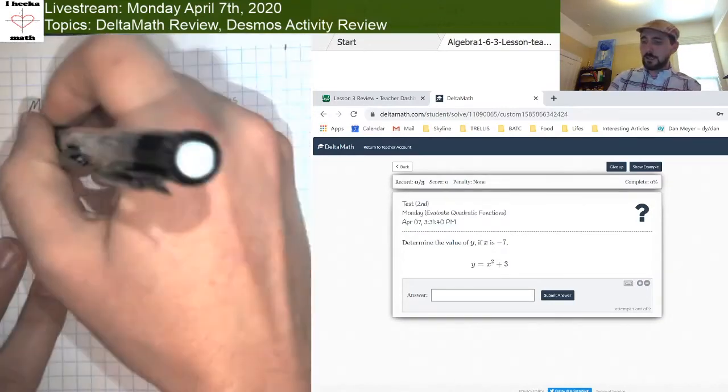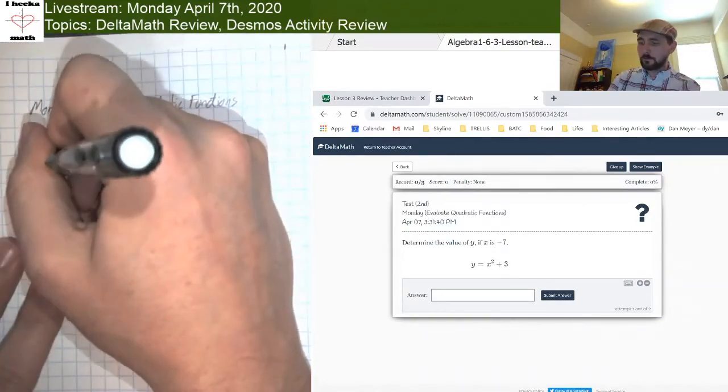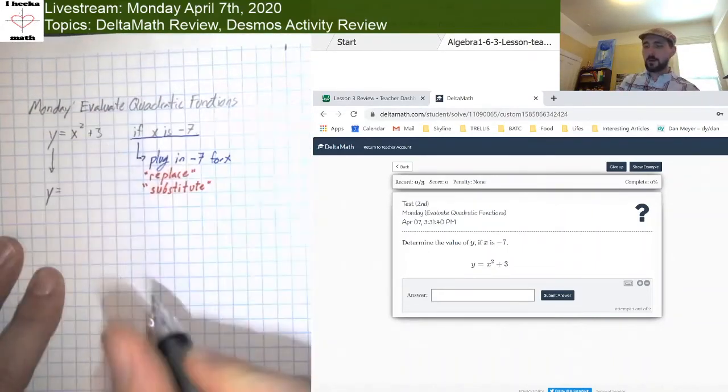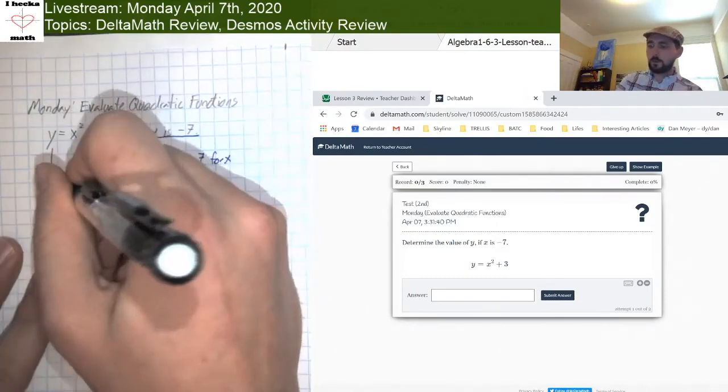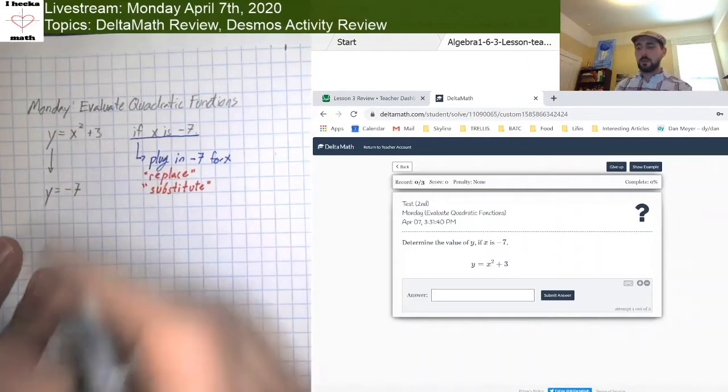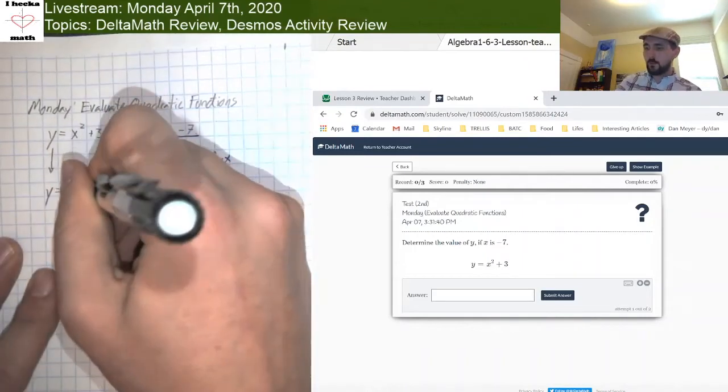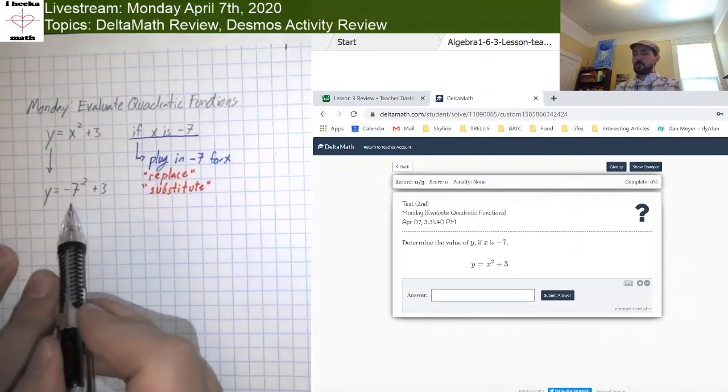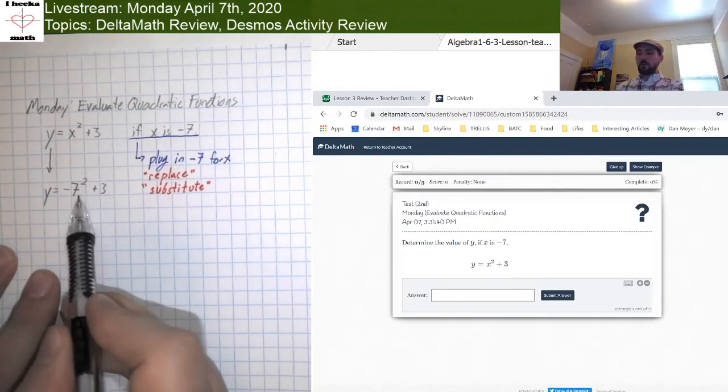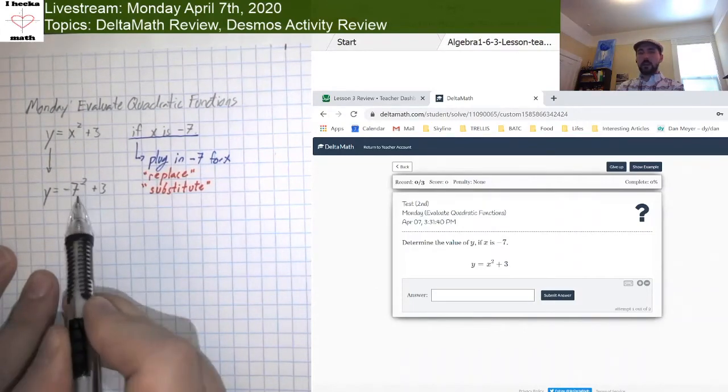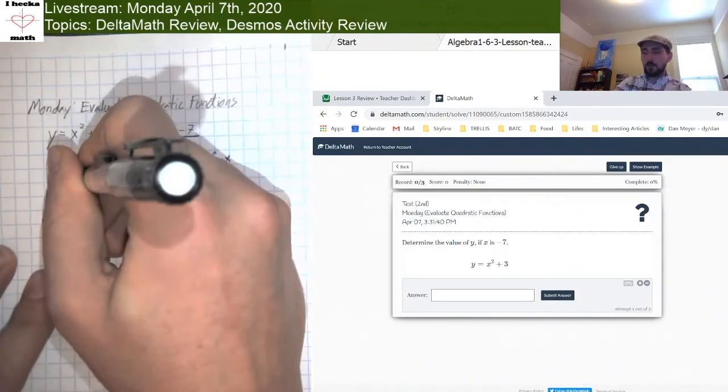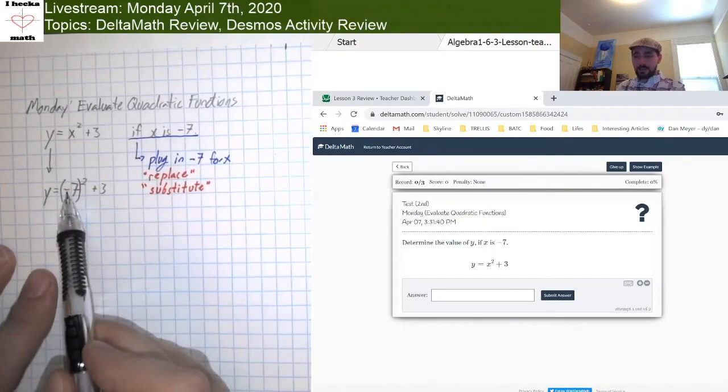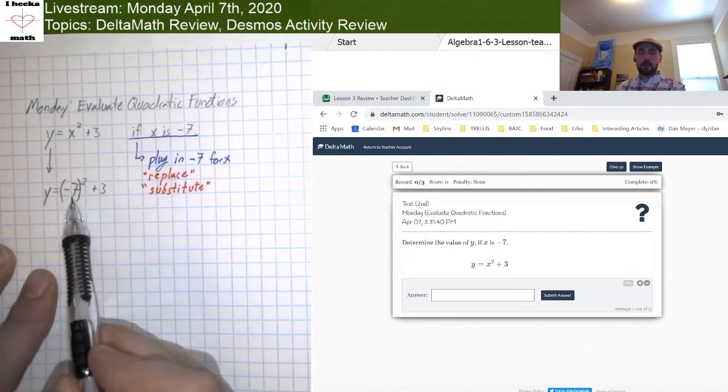So let's see what that looks like. Looking at this equation now, the y is going to remain a y. The x is going to be replaced with a negative 7 squared plus 3. Now, if you've done these problems recently, you might notice what I've done here is a little weird. Because this negative 7 should be wrapped in parentheses.